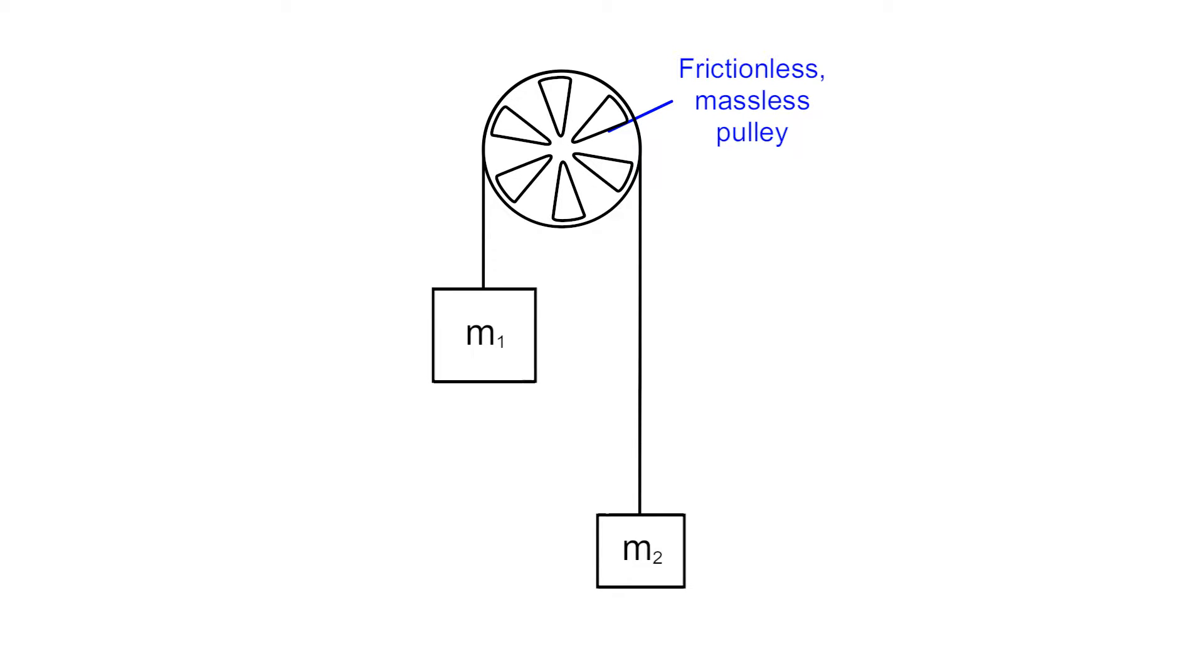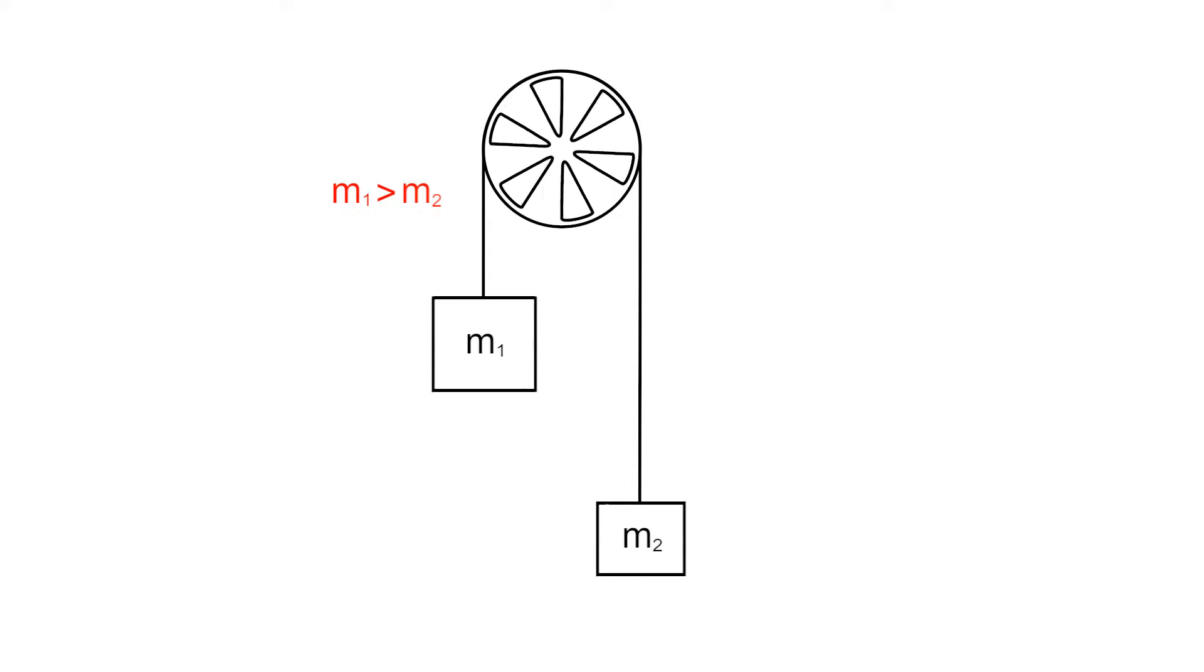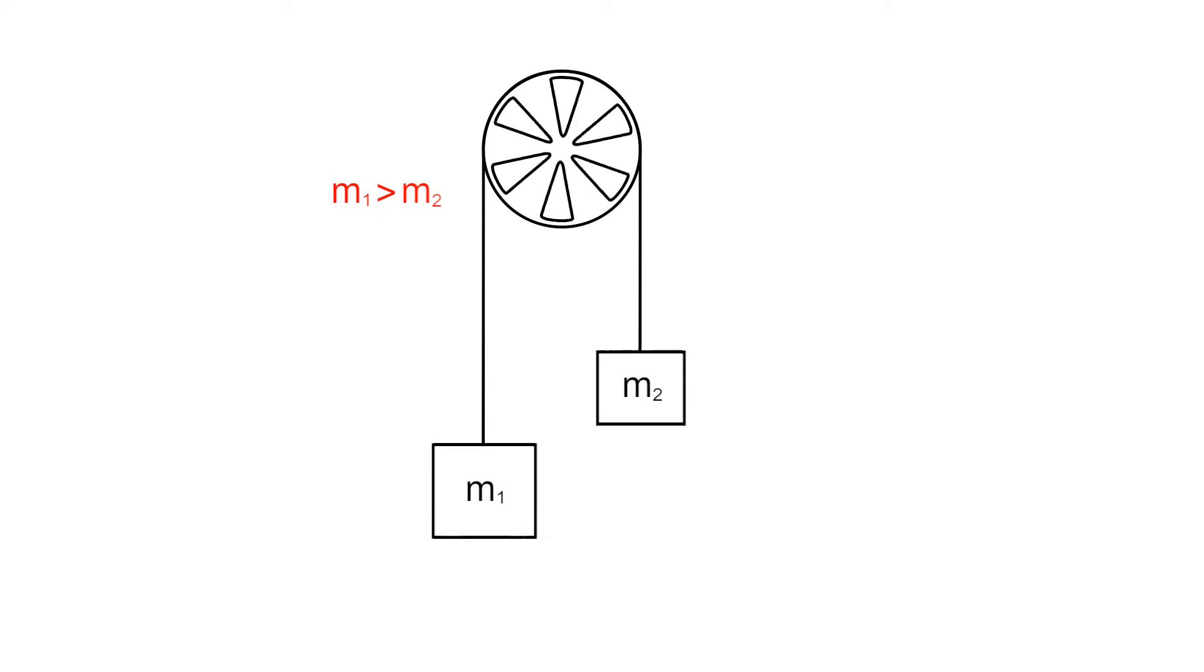For our system, I'll specify that M1 is greater than M2, which means that if the system starts at rest, we expect M1 to fall down and pull M2 up.